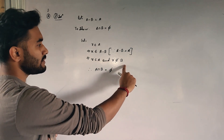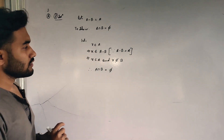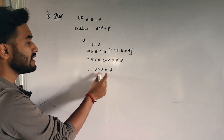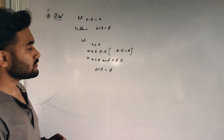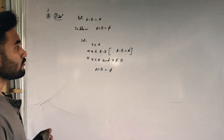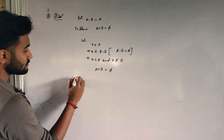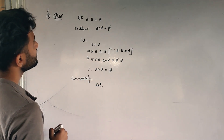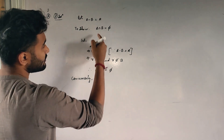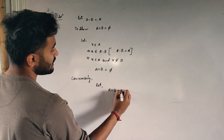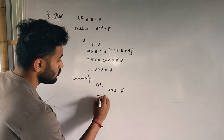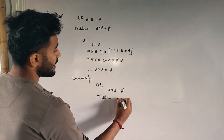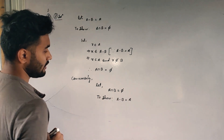Since x belongs to A but does not belong to B, x cannot stay in A intersection B. For the intersection to be non-empty, x must belong to both A and B. Since x is not in B, therefore A intersection B is equal to phi. Now we will prove the converse: let A intersection B equal to phi be our given, and we have to show A minus B equals A.